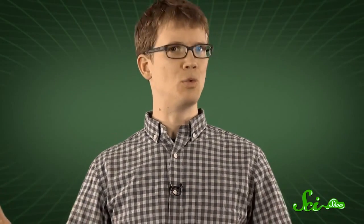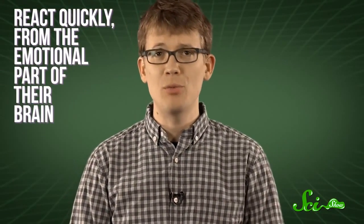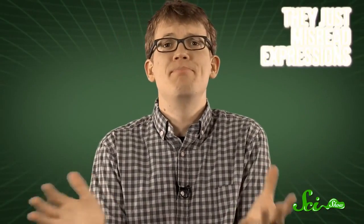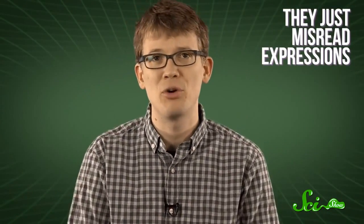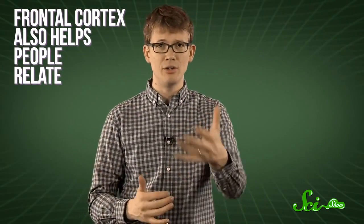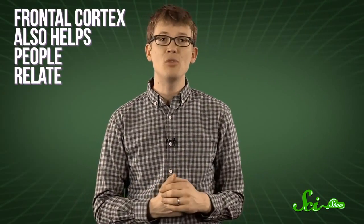Results like these might help explain why teenagers seem to experience frequent mood swings. For one, they tend to react quickly from the emotional part of their brain without running those reactions by the more rational frontal cortex. And two, it could be that they're just misreading expressions and therefore the intentions behind them. The frontal cortex also helps people relate to and understand each other.